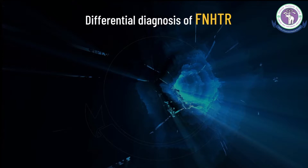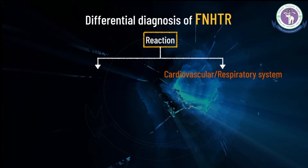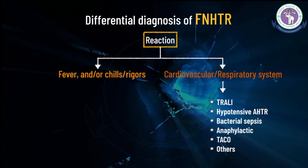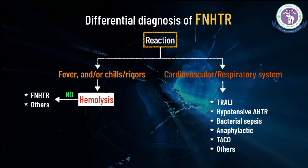Fever may result from other transfusion reactions including hemolytic transfusion reaction, sepsis, and transfusion-related acute lung injury. If there are signs and symptoms related to the cardiovascular or respiratory system, it may indicate transfusion-related acute lung injury, hypotensive acute hemolytic transfusion reaction, bacterial sepsis, anaphylaxis, transfusion-associated circulatory overload, or other underlying diseases. If fever and chills or rigors are present, hemolytic transfusion reaction should be ruled out.